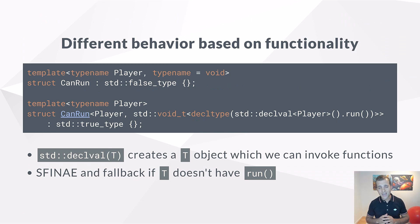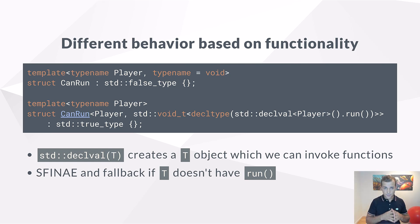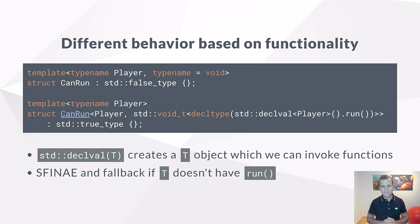Let's learn how to create a trait that tells us whether a class has a member function or not. Here we use declval, which allows us to create a fake instance of a type for compile-time evaluation purposes. If the run member function exists, then whatever its type, it becomes void and the specialization is selected. If player does not have a run member function, then SFINAE applies and we use the base case. To summarize: we create a fake instance of player for evaluation and call its run member function. If that function exists, it has a type — we wrap that type into void so it matches the base case. If the run function does not exist, SFINAE. Feel free to pause the video.